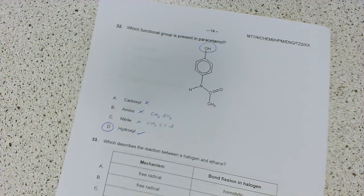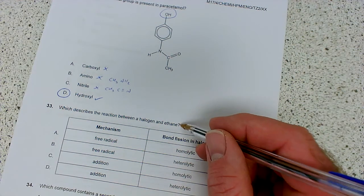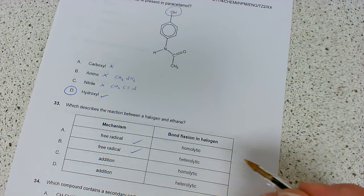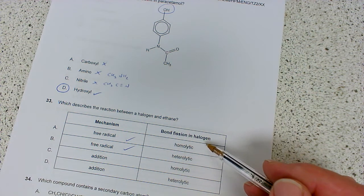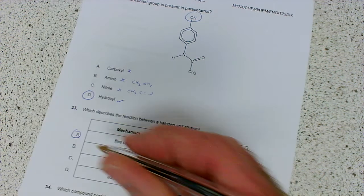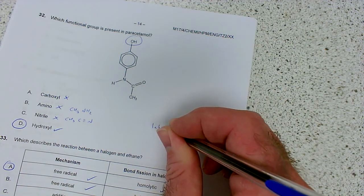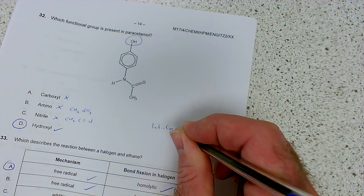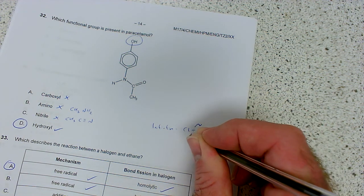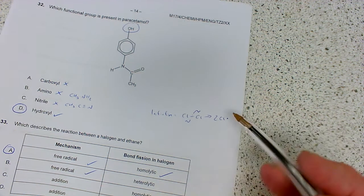Which describes the reaction between a halogen and ethane? That's free radical substitution. What type of bond fission do we get in the halogen? With free radicals we have homolytic bond fission. The three steps: initiation is where the halogen bond splits by homolytic fission.